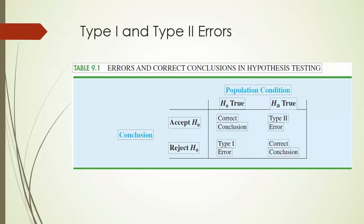Now, I want to bring you back to our coin flip example and its decision rule. In machine learning, decision rule is also called decision boundary. Different decision rules will lead to different conclusions and different probabilities of type 1 and type 2 errors. In our example, let's consider an extreme decision rule: if we see at least two heads or at least two tails, we conclude this is not a fair coin; otherwise, this is a fair coin.